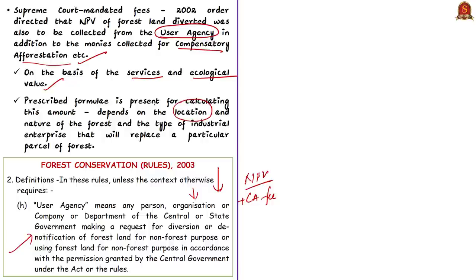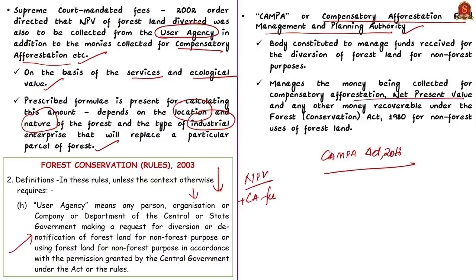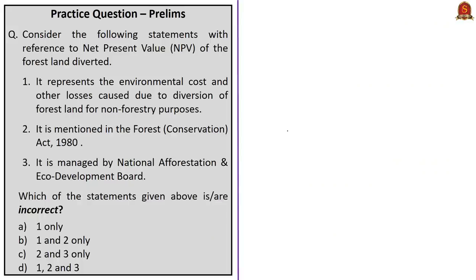The Supreme Court also directed the setting up of a body to manage funds received for diversion of forest land for non-forest purposes. This body is named the Compensatory Afforestation Fund Management and Planning Authority (CAMPA). To utilize the monies deposited under CAMPA, the government enacted the CAMPA Act of 2016. This body manages money collected for compensatory afforestation, NPV, and any other money recoverable under the Forest Conservation Act of 1980 for non-forest uses of forest land.